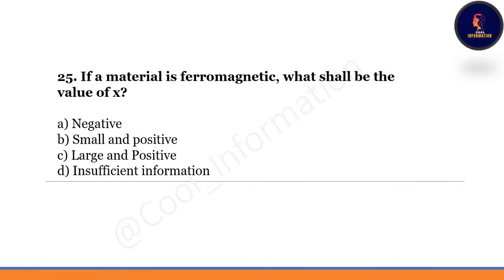If a material is ferromagnetic, what shall be the value of susceptibility χ? Option A: negative. Option B: small and positive. Option C: large and positive. Option D: insufficient information. Correct option is C — large and positive is the value of χ for a ferromagnetic material.